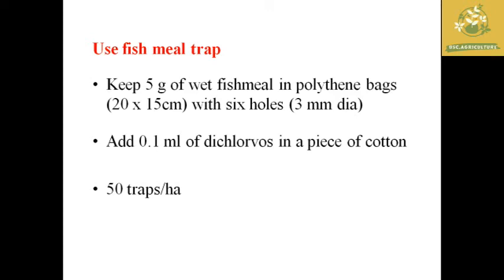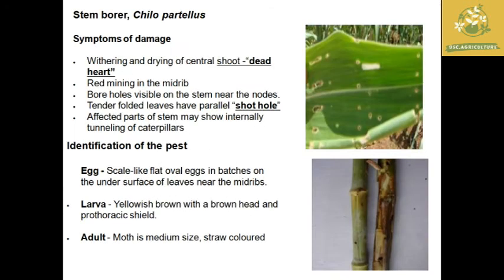For the fish meal trap, keep around 5 grams of wet fish meal in polythene bags with 6 holes of 3 mm diameter, and 0.1 ml of dichlorvos is placed with a piece of cotton. Around 50 traps per hectare is effectively used for the control of these flies.